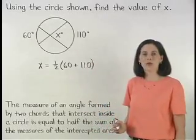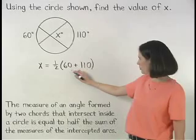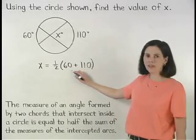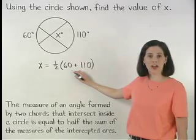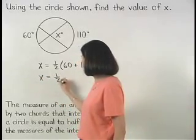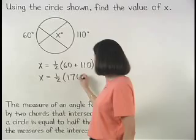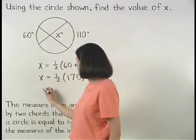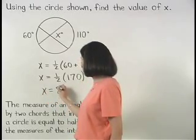Solving from here, we first simplify inside the parentheses. 60 plus 110 is 170, so we have x equals one half times 170. Or x equals 85.